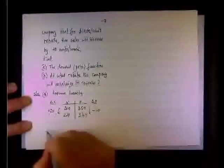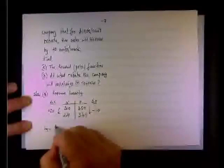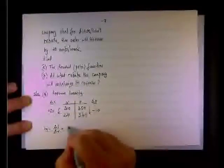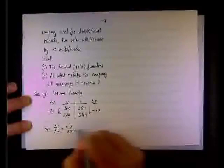So delta p will be negative 10, and delta x, the quantity, will be plus 20. And this will give us, since we assume linearity, here's the slope, delta p over delta x, which will be negative 10 over 20, negative 1 half.